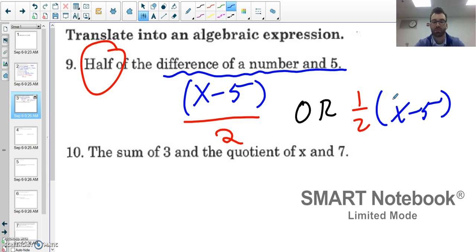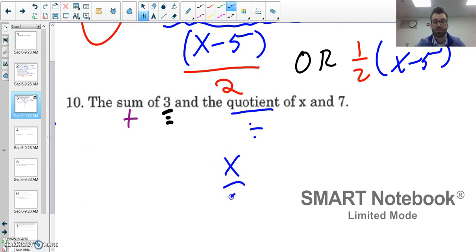Next one. Sum right away I know that's addition, so I have the sum of three and the quotient... quotient means division of x and seven. So the quotient of x and seven is going to look like x over 7. The sum means I'll have addition of 3 and this quotient, so 3 + x/7.